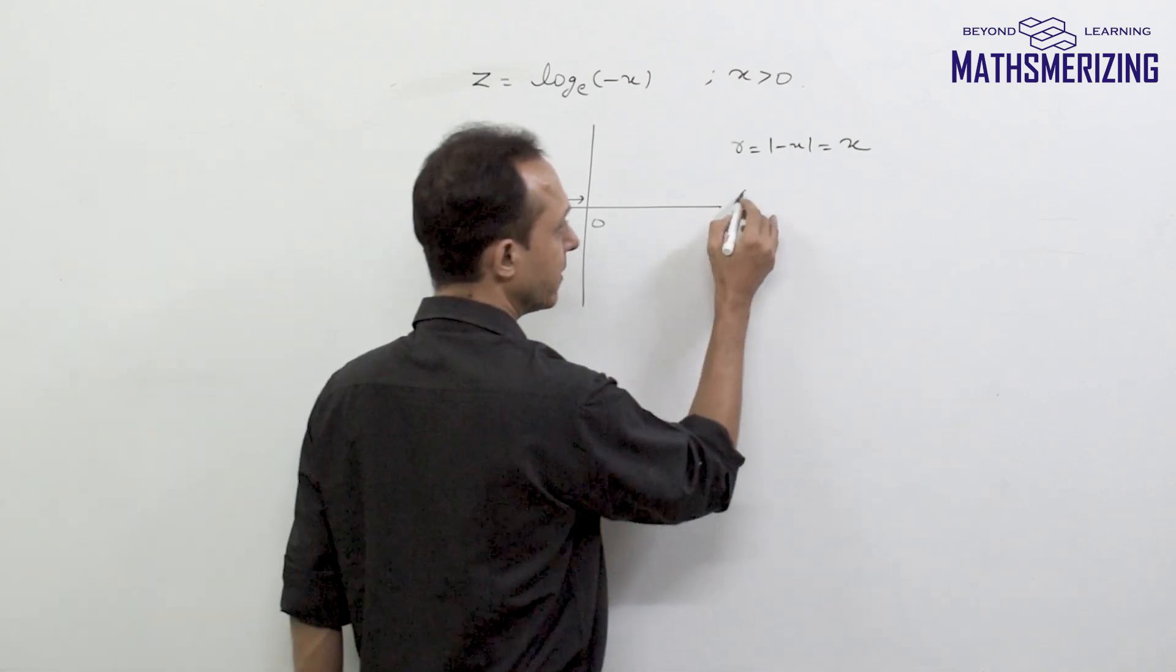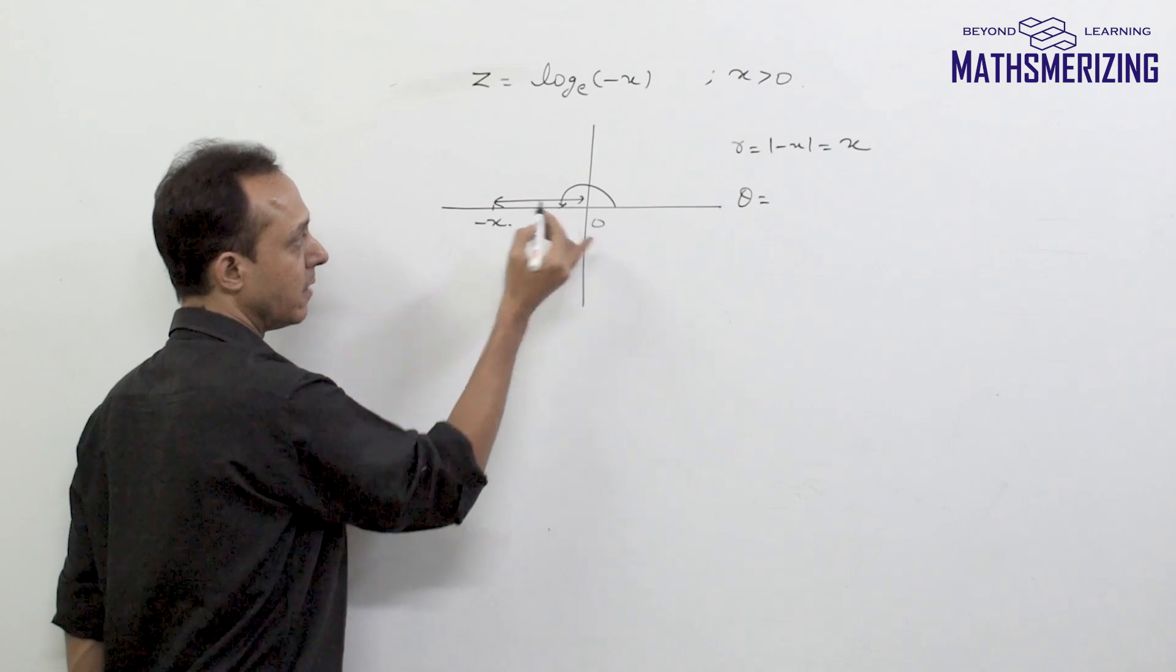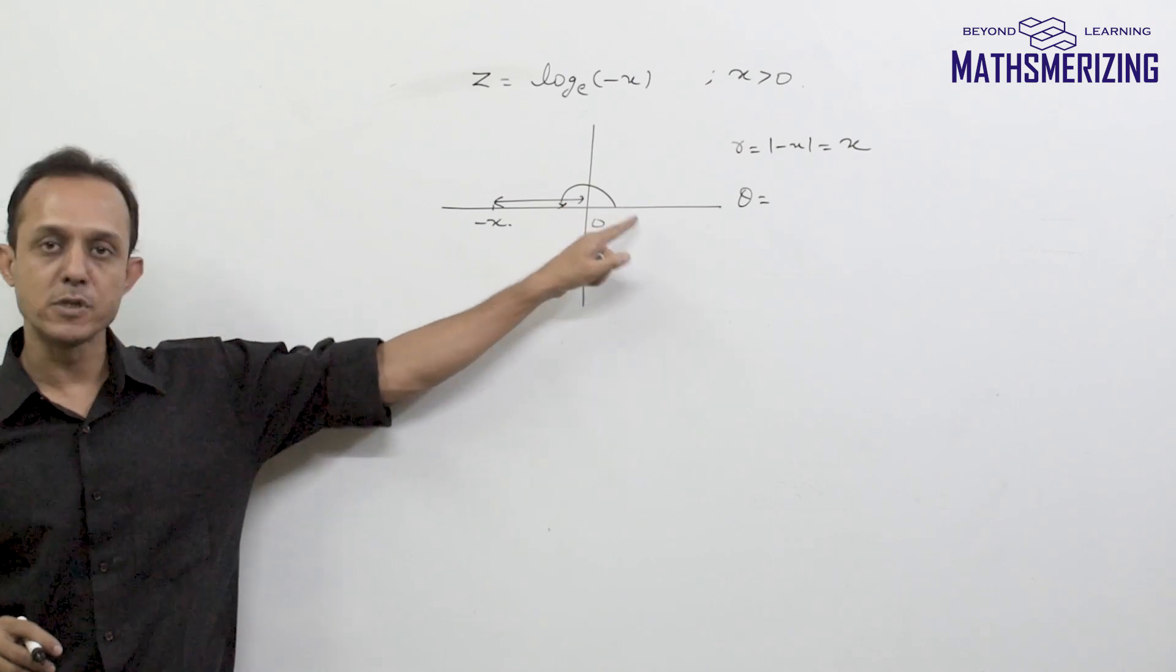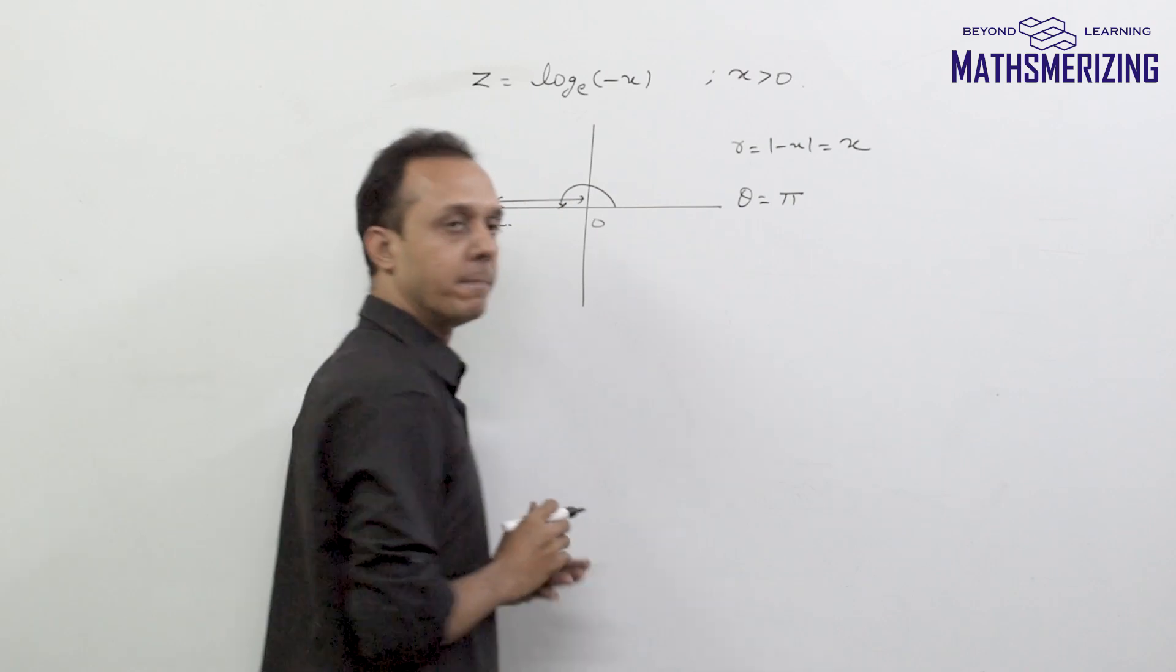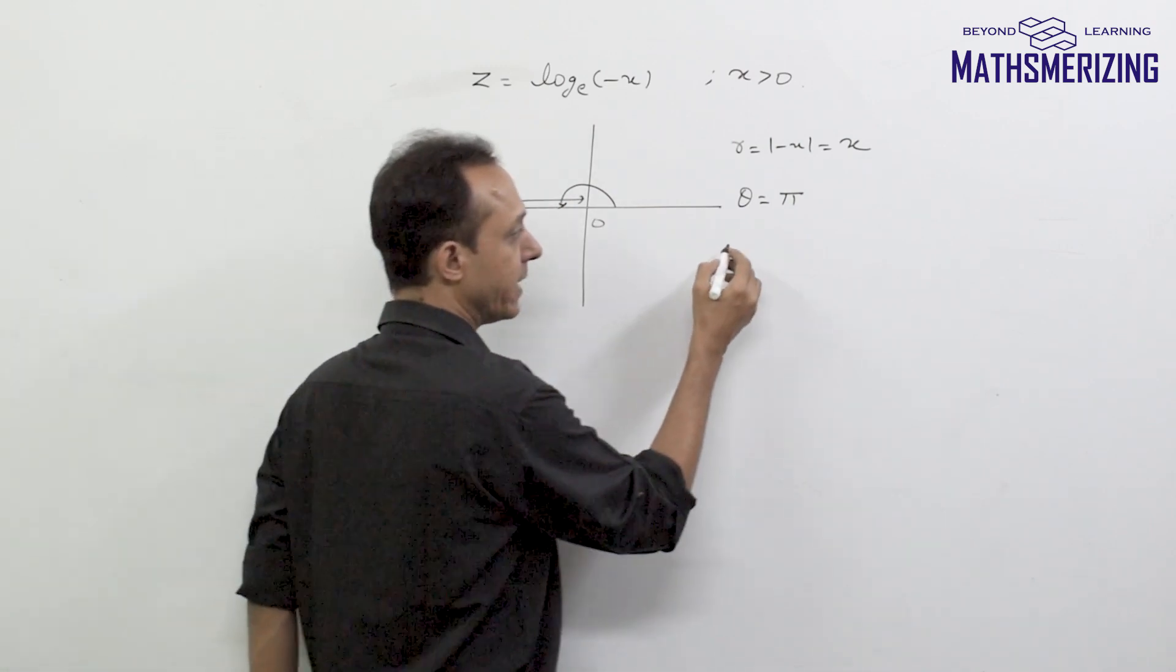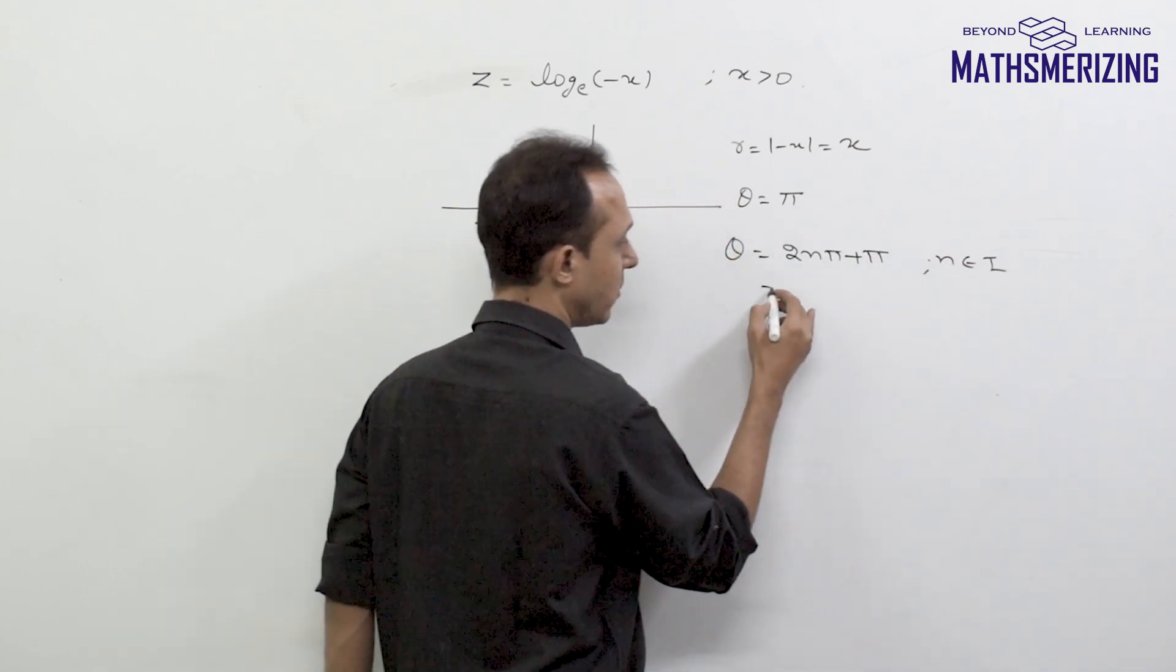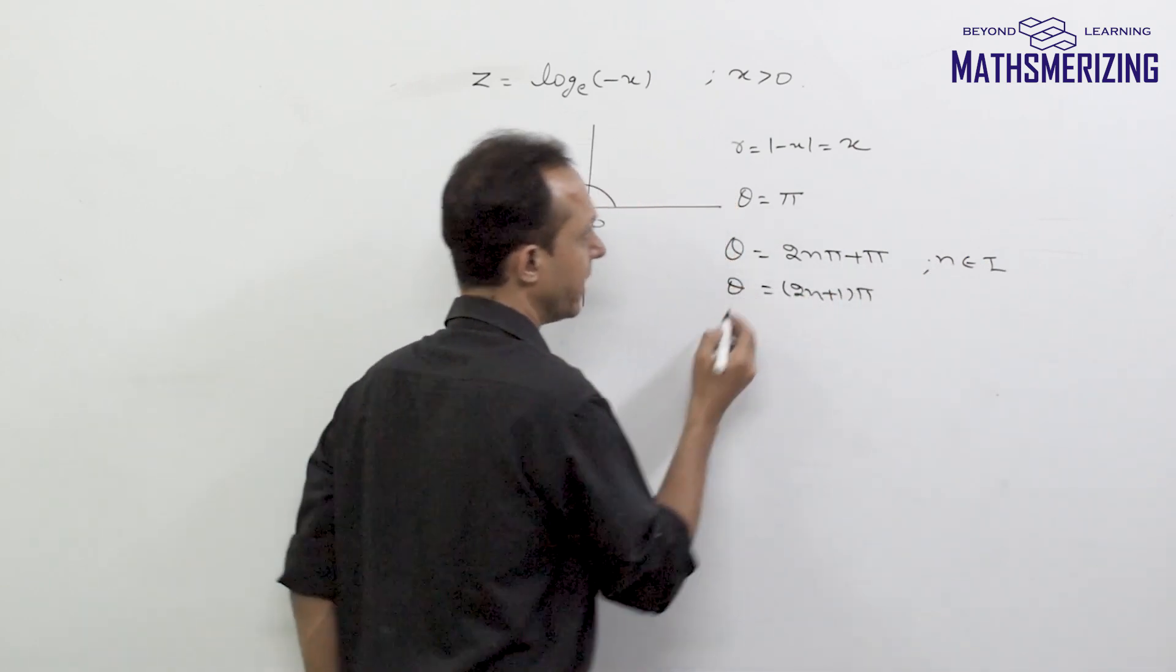Now I'll find its argument. Now argument is nothing but the angle it makes with positive real axis. Now angle that any negative real numbers will make with positive real axis is simply pi. So in this case this angle will be pi and I know that this log is a multivariate function. So I'll simply write this angle as 2n*pi + pi where n belongs to set of integers or I can write this is (2n + 1)*pi.